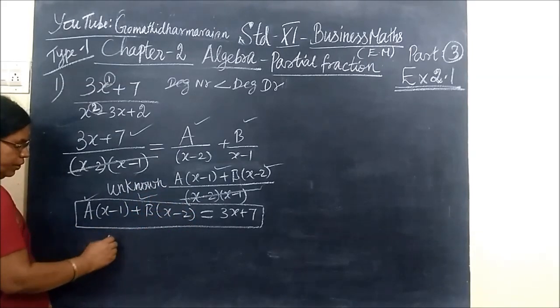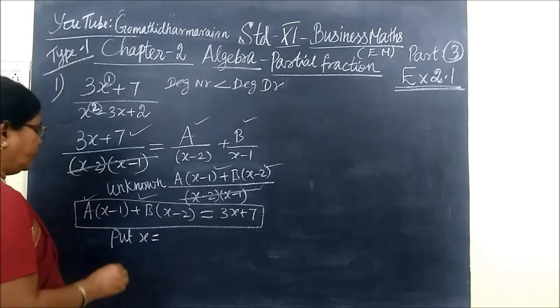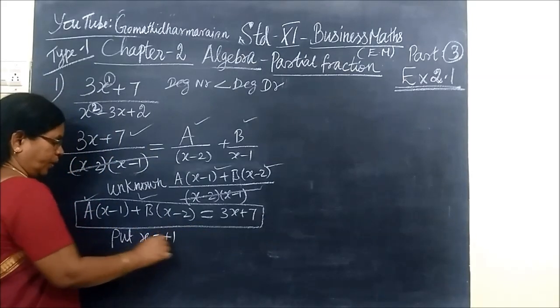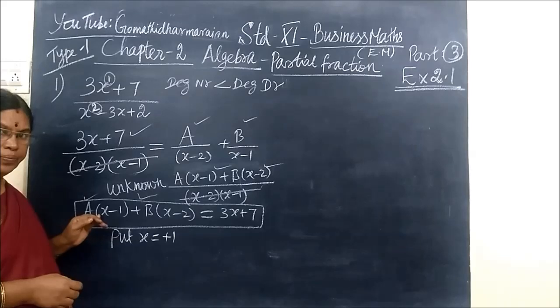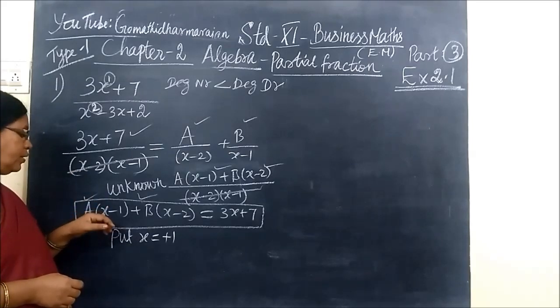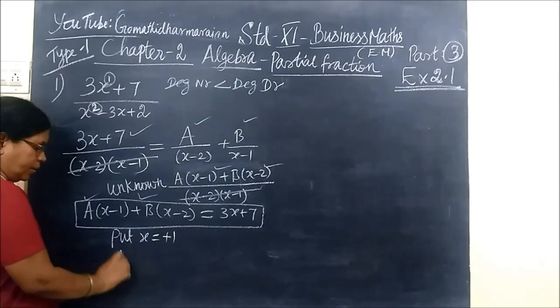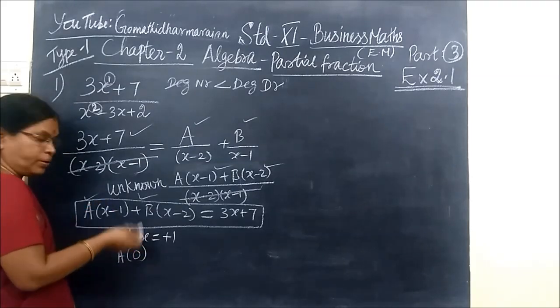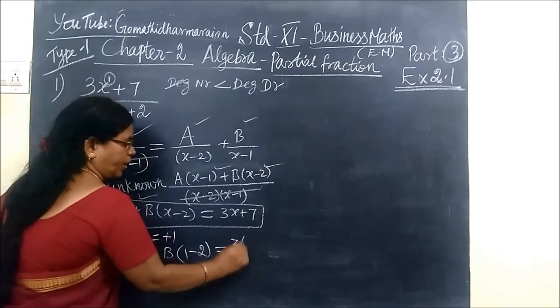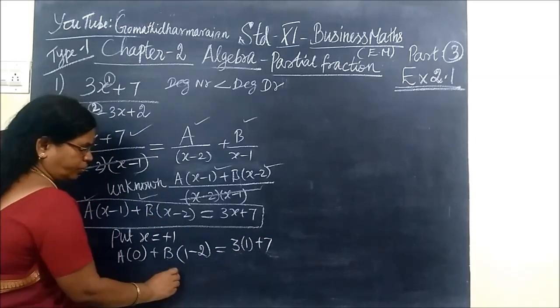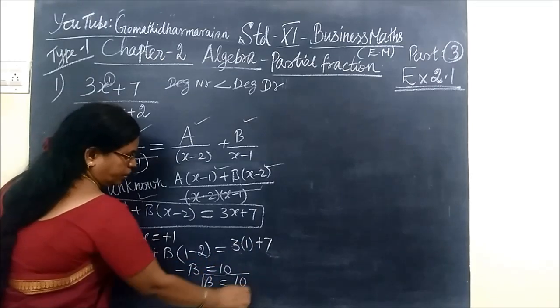Now, here you are writing, put x equal to, we want to find the value of A and B. For that you substitute x equal to plus 1. x minus 1 this will be zero. If you substitute plus 1 it will be zero. Then B bracket, for x you are substituting 1, so 1 minus 2, minus B equal to 10, which implies B equal to minus 10.